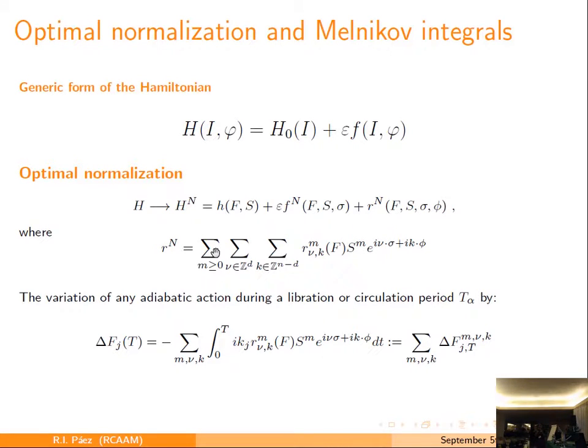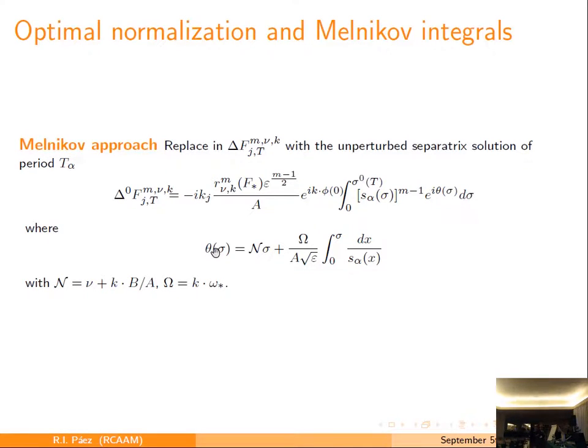We use the Melnikov approach. Essentially what Melnikov is suggesting is, okay, you are in the separatrix because they are diffusing, you take the solution that you gave from the normal form, you replace it, you integrate. And this gives a certain delta. If you do this and resolve what remains in that integral, what you get is that essentially the variation depends on the form of the separatrix solution and you have an exponential that depends on a certain phase that we call theta.